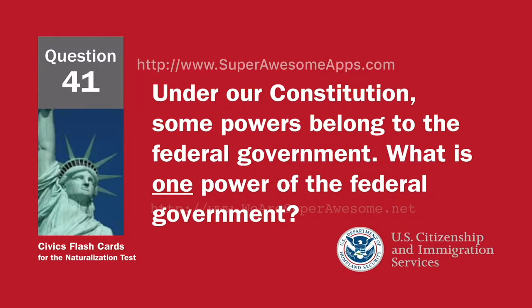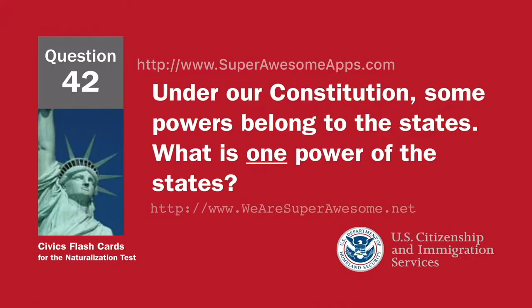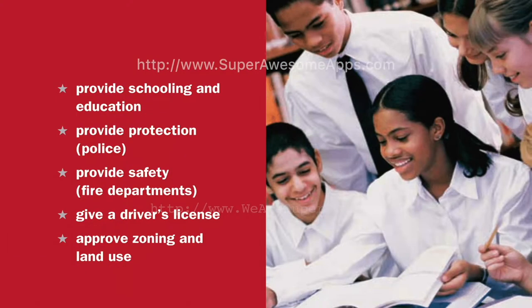Under our Constitution, some powers belong to the federal government. What is one power of the federal government? To print money. To declare war. To create an army. To make treaties. Under our Constitution, some powers belong to the states. What is one power of the states? Provide schooling and education. Provide protection. Police. Provide safety. Fire departments. Give a driver's license. Approve zoning and land use.